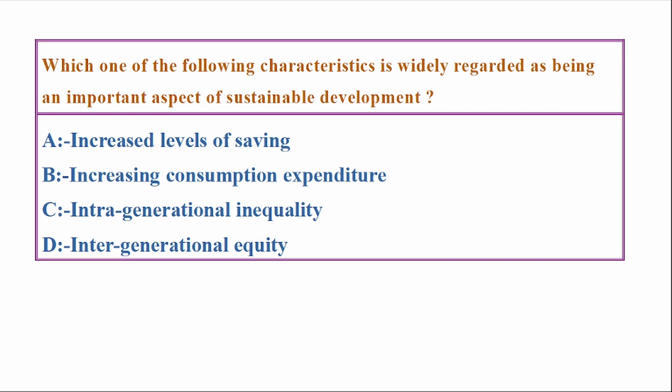Which one of the following characteristics is widely regarded as being an important aspect of sustainable development? Options: Increased levels of saving, increasing consumption expenditure, intragenerational inequality, intergenerational equity. Answer: Option D, intergenerational equity.